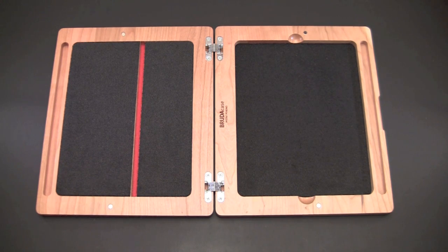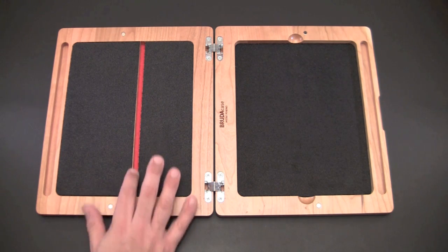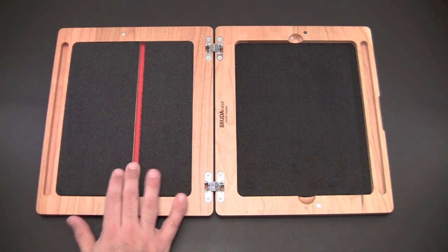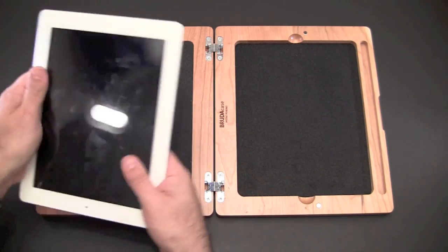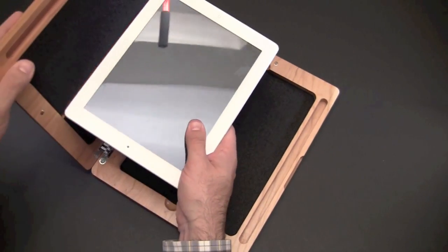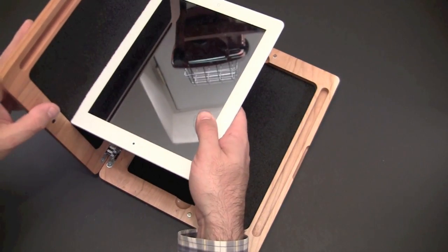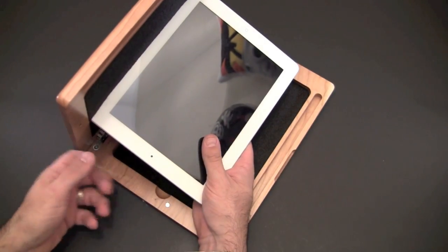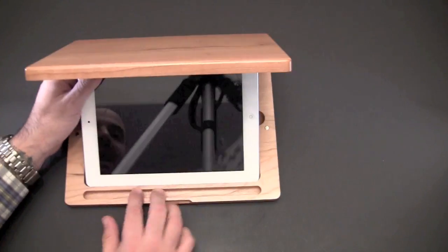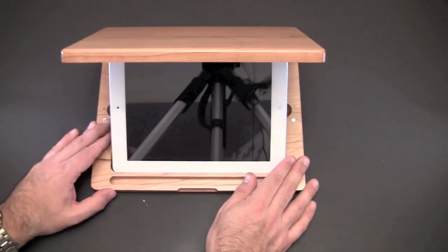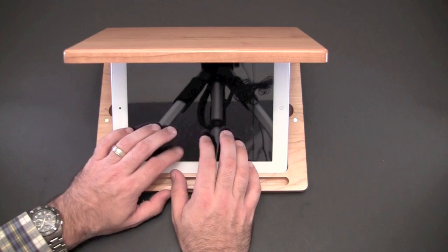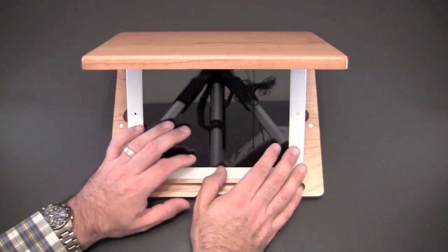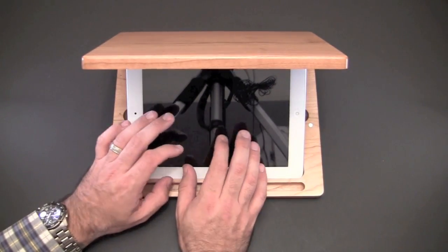So the Bruda case allows for two different stand orientations, both a typing orientation and a video orientation. Take note of the two notches here, one kind of lower and one higher. So the first one is used for the typing position. Slide one end of the iPad into that crevice or that notch and then lower the case down till it locks into the bottom portion of the case. And now you're in a nice mode for typing and doing other swiping tasks on the iPad.